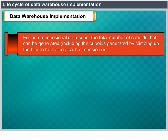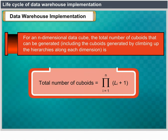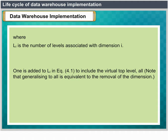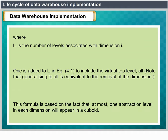For an N-dimensional data cube, the total number of cuboids that can be generated, including those generated by climbing up the hierarchies along each dimension, equals the product from i=1 to N of (Li + 1), where Li is the number of levels associated with dimension i. The 1 is added to Li to include the virtual top level ALL, which is equivalent to the removal of the dimension. This formula is based on the fact that at most one abstraction level in each dimension will appear in a cuboid.